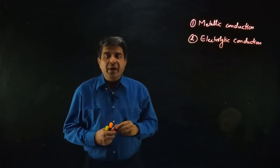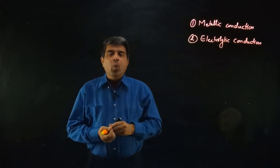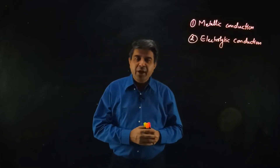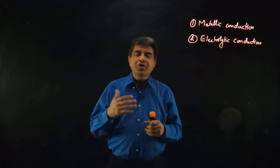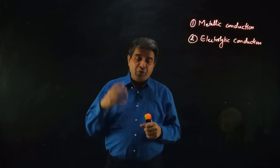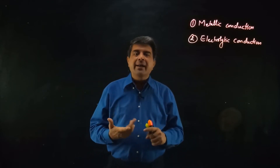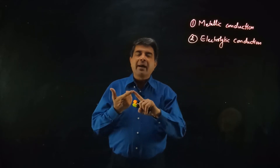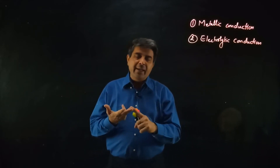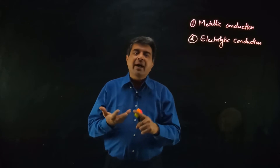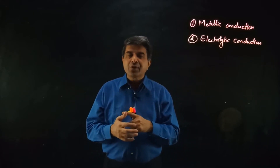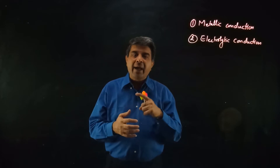Let's try to understand what metallic conduction is. Since your formative years you know that metals always show five characteristic properties: metals are lustrous, metals are malleable, metals are ductile, metals are sonorous, and metals are good conductors of heat and electricity.